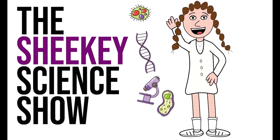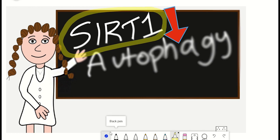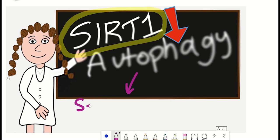Hello and welcome to the Shiki Science Show where in this video we're going to talk about SIRT1, a sirtuin, and how it gets downregulated by autophagy in senescent cells and during aging.